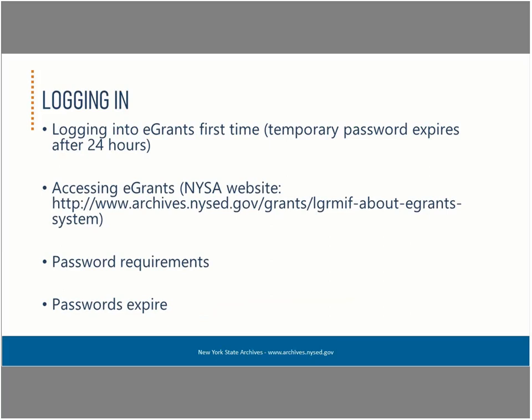Once you submit your registration form, you will receive an email from the ArchGrants mailbox. This email will contain your username and a system-generated temporary password. The temporary password is only good for 24 hours, so please finish setting up your account as soon as you receive the email. Your username will be in the format firstname.lastname and will not change. The first time you log into eGrants, you will need to change the temporary password and set up security questions. Password requirements include: at least eight characters, one of which must be numeric, and it cannot be the same as your username or original default password. Make a note of your new password and security questions, as you will need these to reset your password.